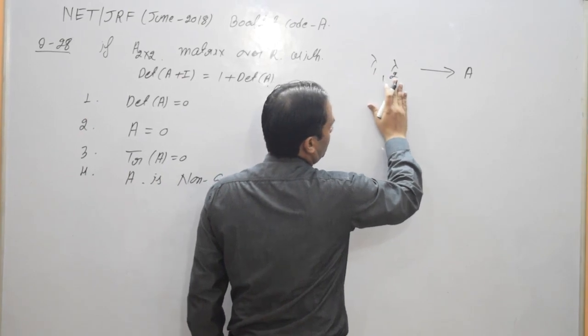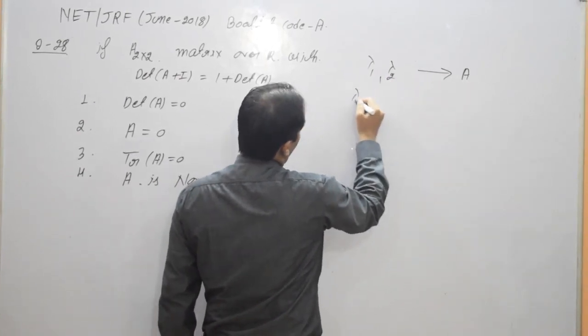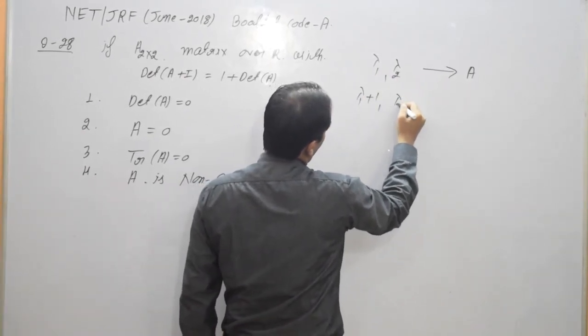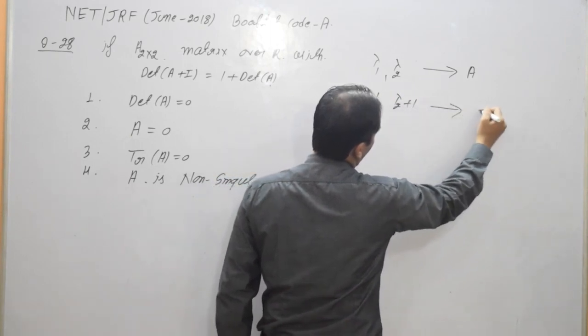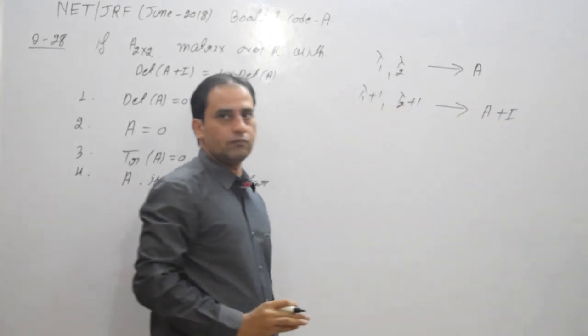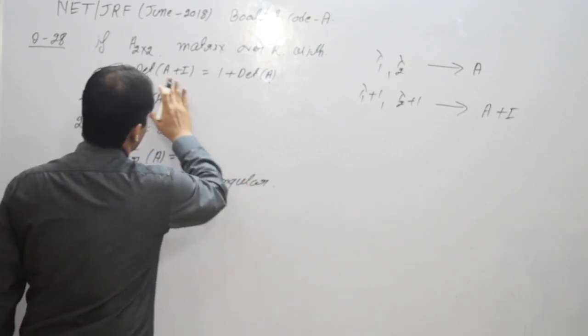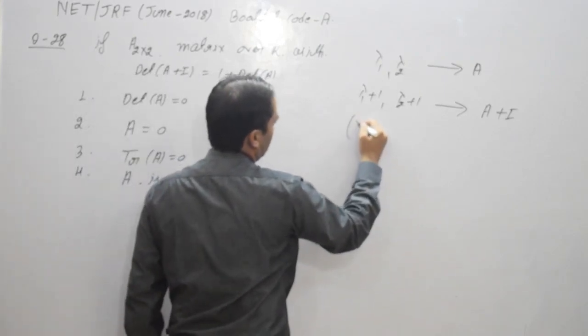Then if λ1, λ2 are two eigenvalues of A, then λ1+1 and λ2+1 are eigenvalues of A+I. And by using this equation, product of eigenvalues is determinant.